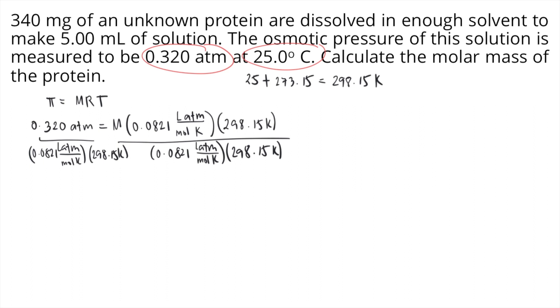On the right side, R and T will cancel out, so what is left is M or the molarity. On the left side, grab your calculator and compute 0.320 divided by 0.0821 times 298.15. You will get an answer of about 0.01307.